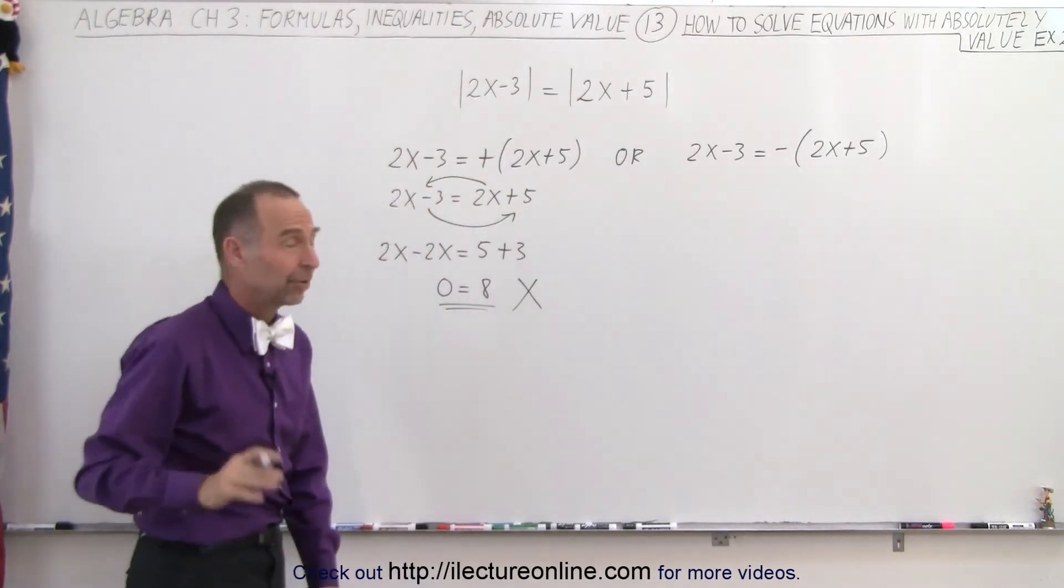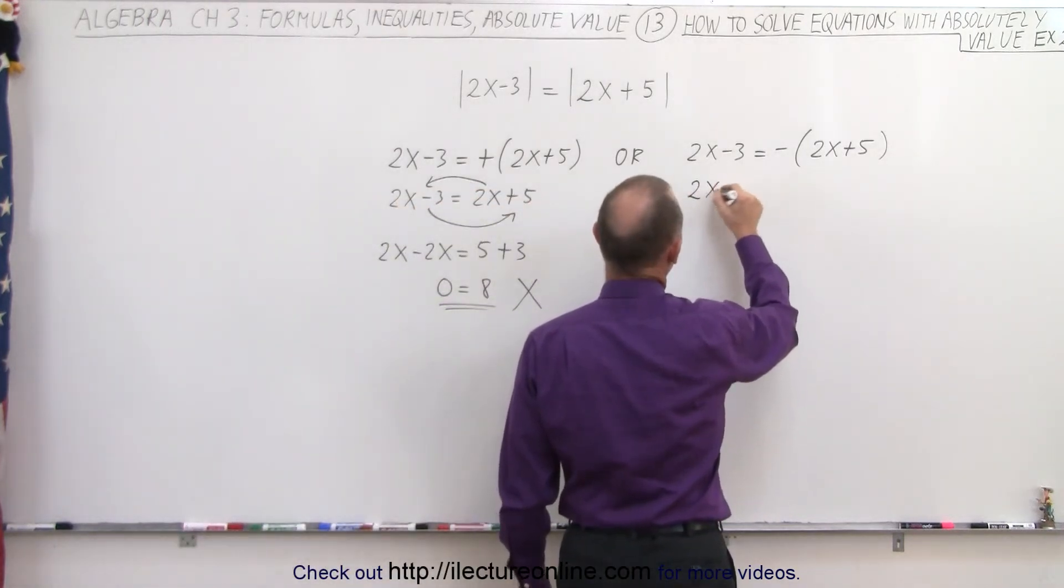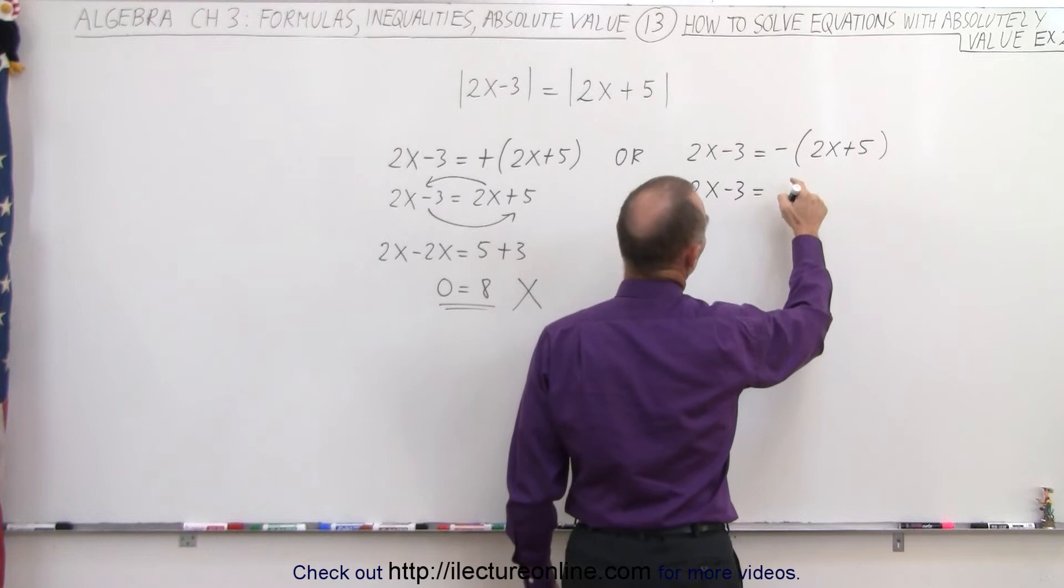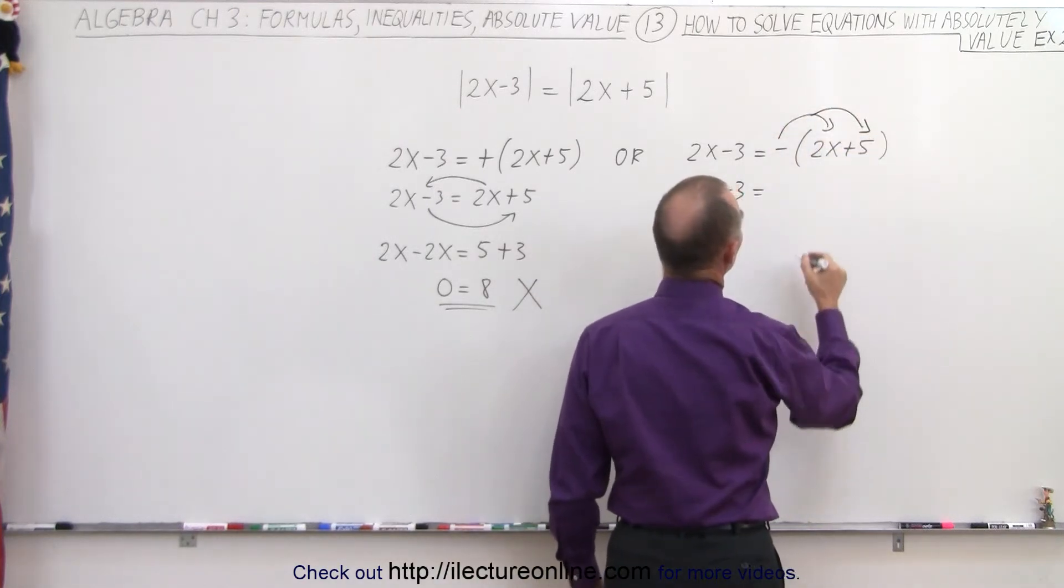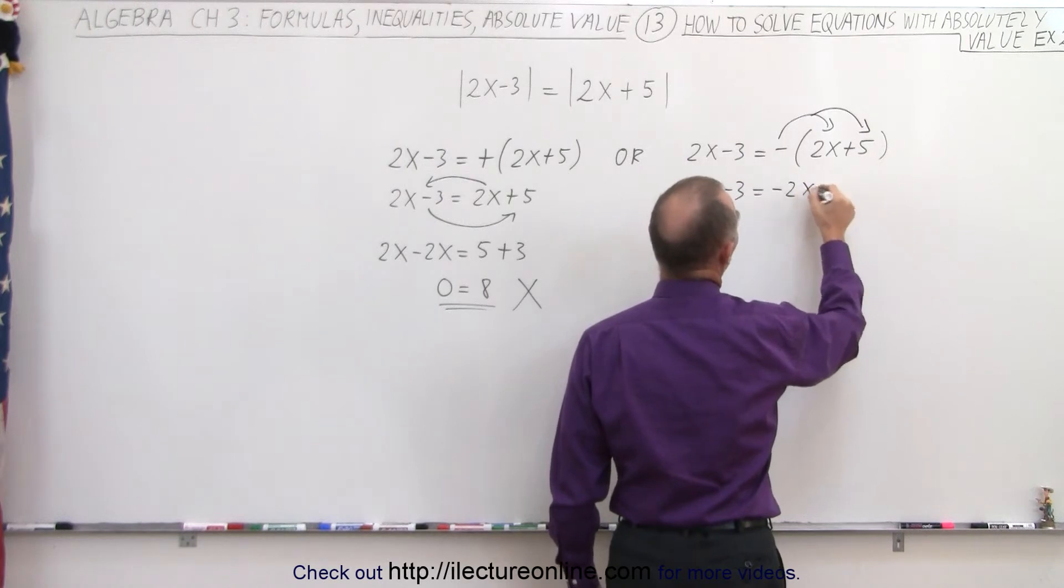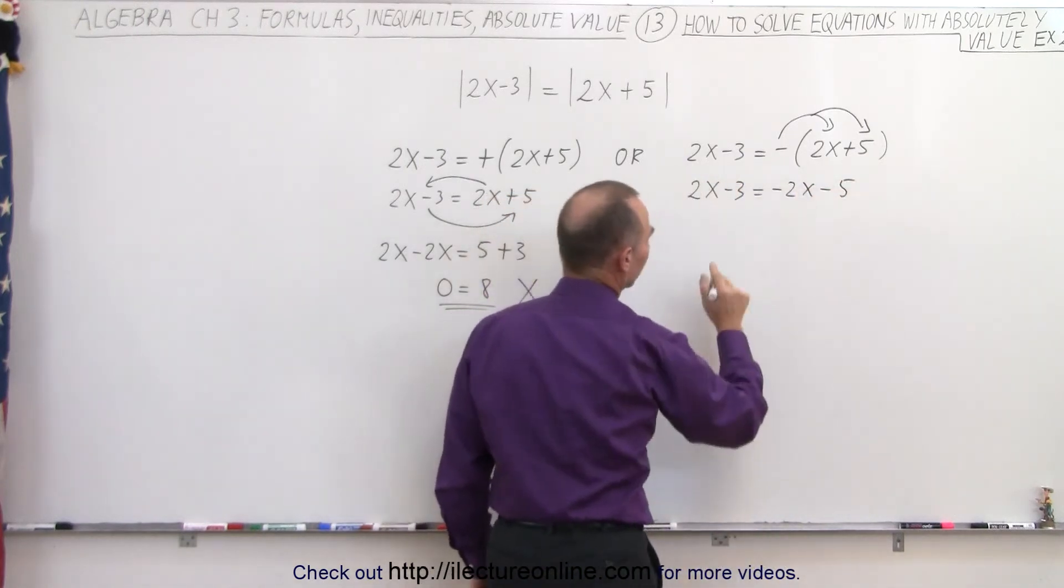Let's see what happens on the right side. Here we end up with 2x minus 3 equals, when we distribute the negative on both terms inside the parentheses, we end up with negative 2x minus 5. So now we move all the x's to one side, all the numbers to the other.